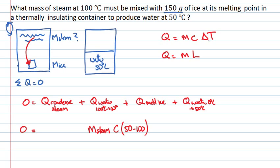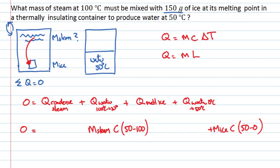If the final temperature is larger than the initial temperature, heat was added in — a positive Q. If the temperature decreases, heat was removed — a negative Q. We're removing heat from the steam and putting it into the ice. For the ice-water warming from 0 to 50 degrees Celsius, the mass is the original mass of ice, times the specific heat of water, times the change in temperature (50 minus 0) — a positive quantity, since we're adding heat.